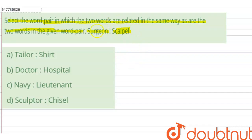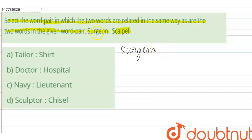Let us look at the relationship between surgeon and scalpel. Surgeons are those who do surgery — cardiac surgeons, gastric surgeons, neurosurgeons who do surgery on the brain. Surgeons use a scalpel to perform surgery.